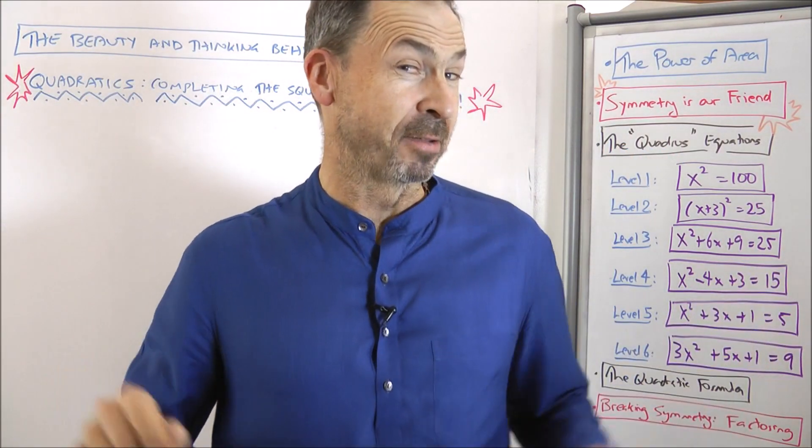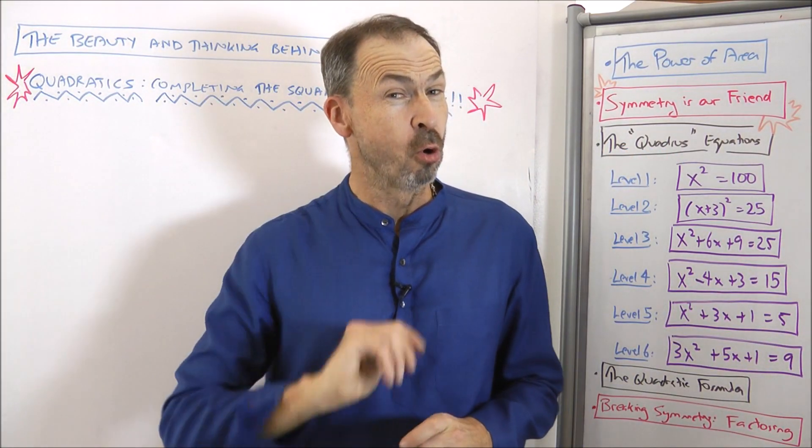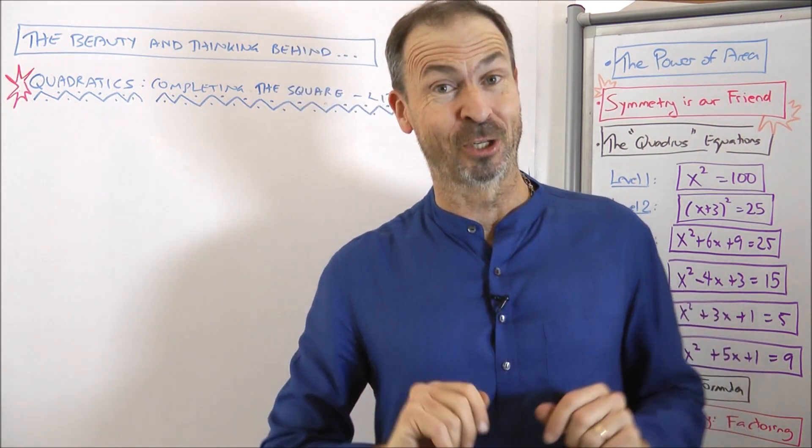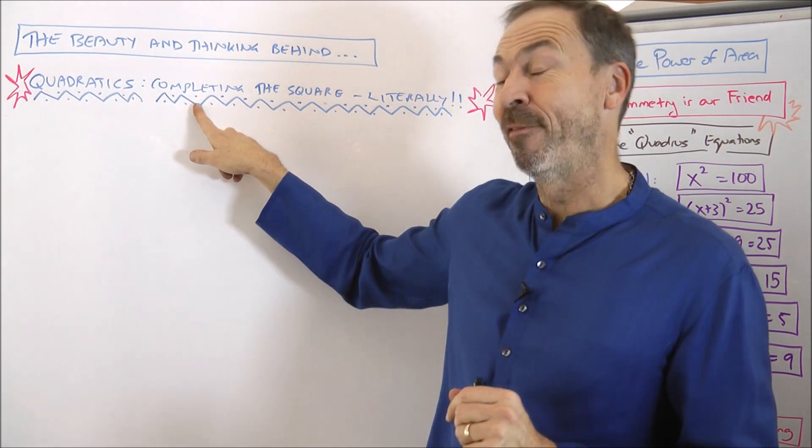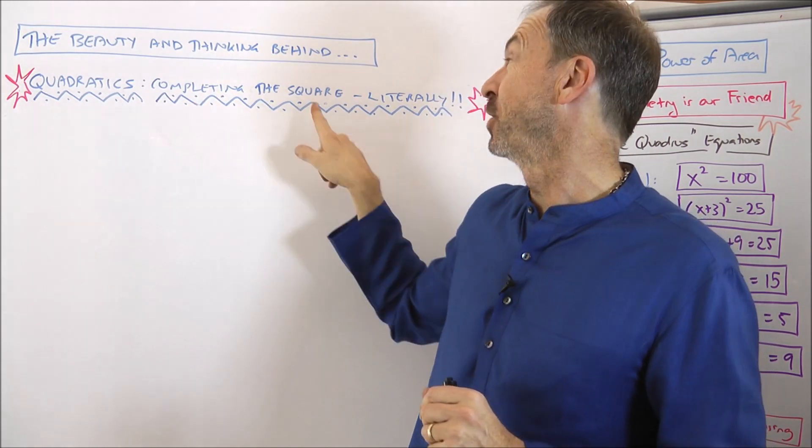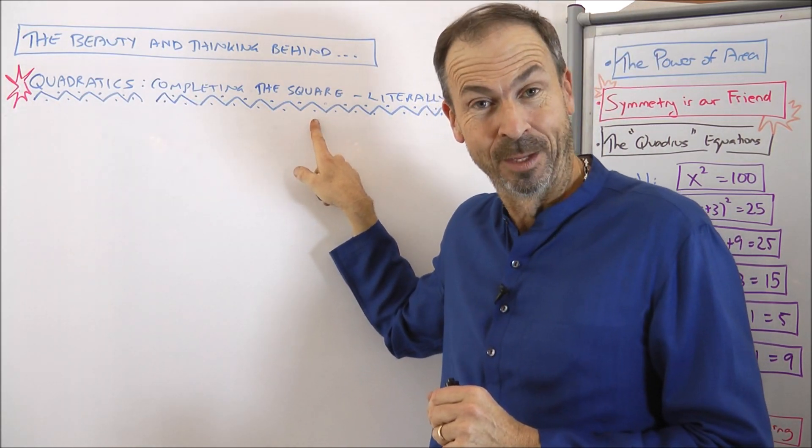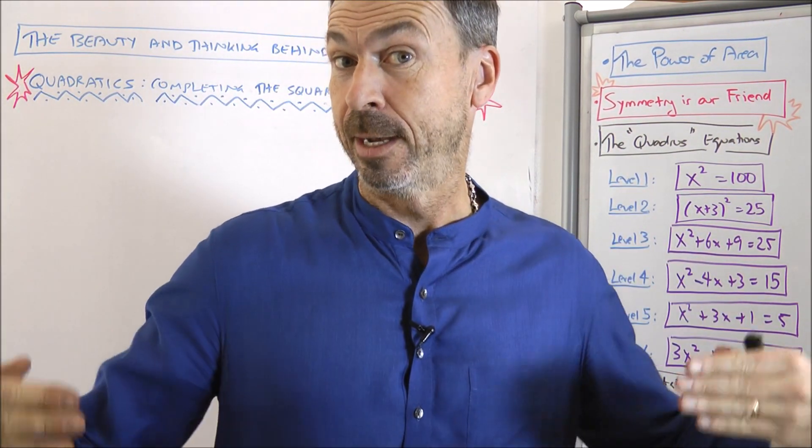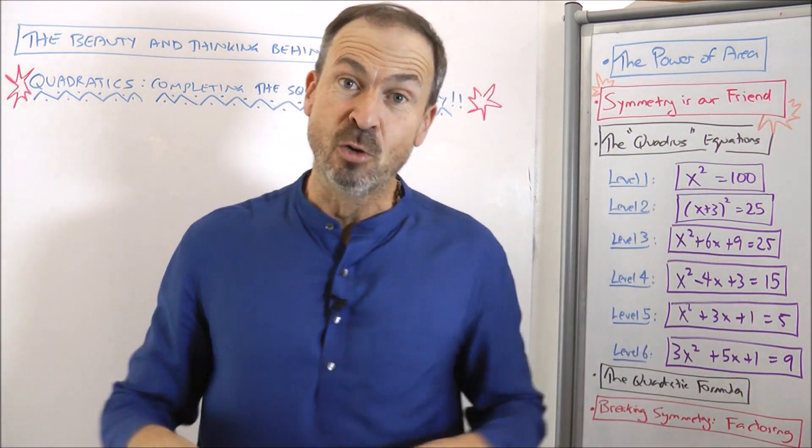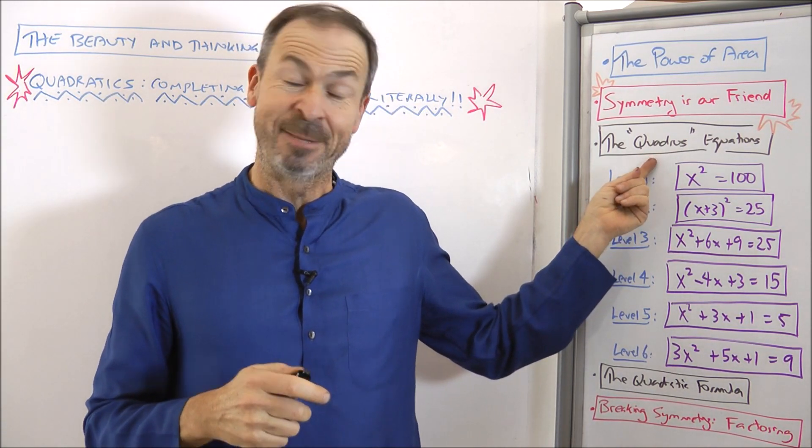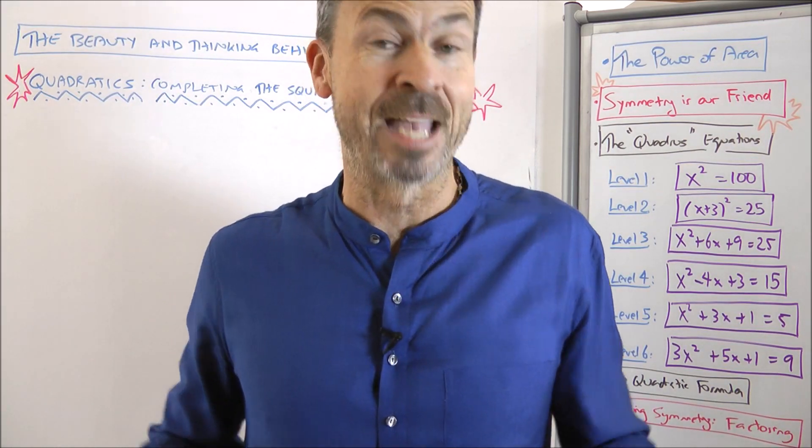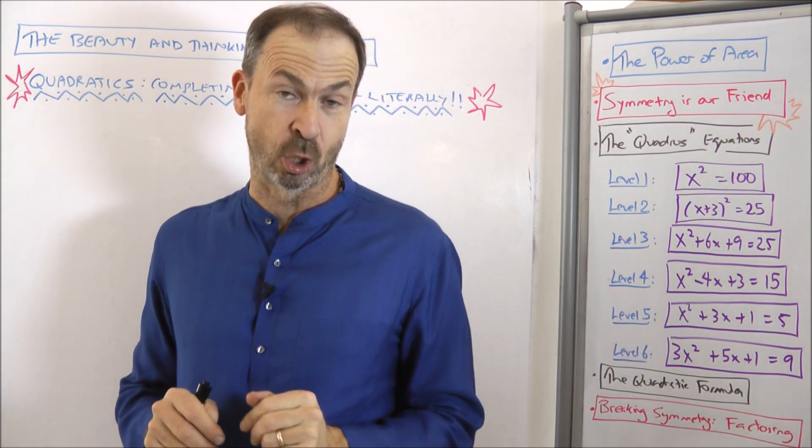Scholars some 2,000 to 3,000 years ago realized there's a whole class of mathematical equations that can be solved by drawing a picture of a square. In fact, maybe a picture of an incomplete square and then just completing the picture to a full square. So these equations became known as the ones that could be solved by the square method. Now the Latin word for square is quadris, so these became equations known as the ones that could be solved by the quadris method. And today we call them quadratic equations.